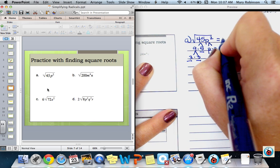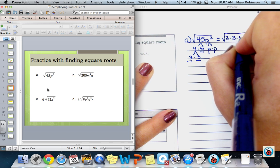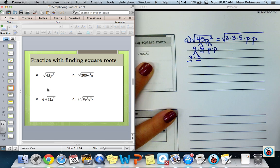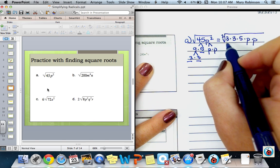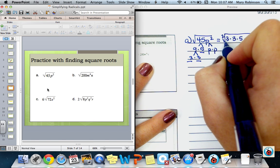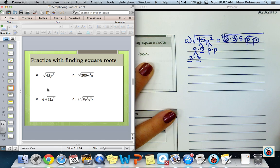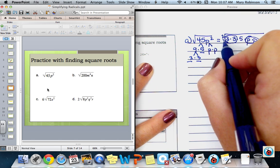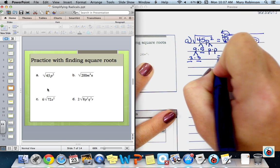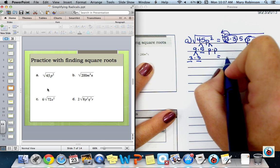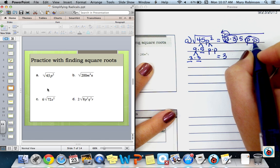So the square root of 45p squared, if I write all the factors out, we've got 3 times 3 times 5 times p times p. Because my index is 2, I want to form groups of 2 of the same factor. So I'm going to circle my 3's because I have 2 of them. And I will circle my p's because I have 2 of them. Think of this as being 9. The square root of 9 is 3. So only one 3 is coming out here. The square root of this 3 times 3, or 9, is 3. And the square root of p times p is p.